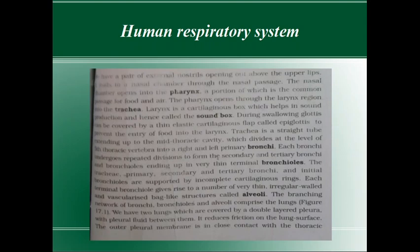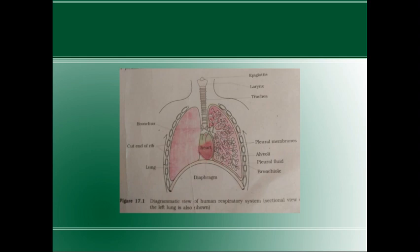This trachea divides. It has C-shaped cartilaginous rings. It divides into right and left bronchi.